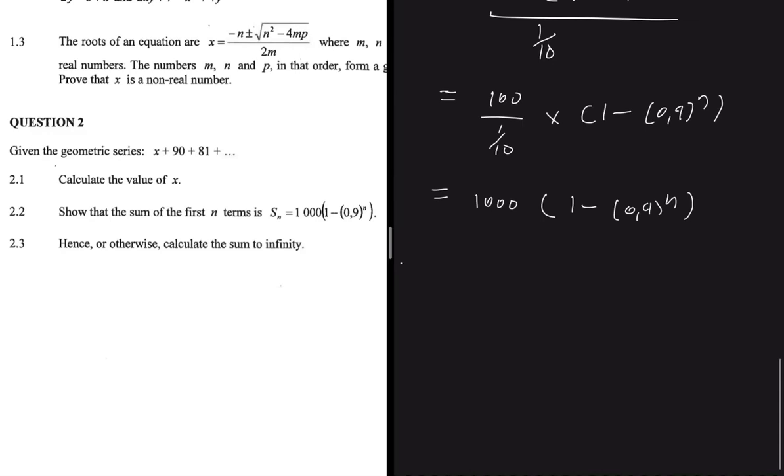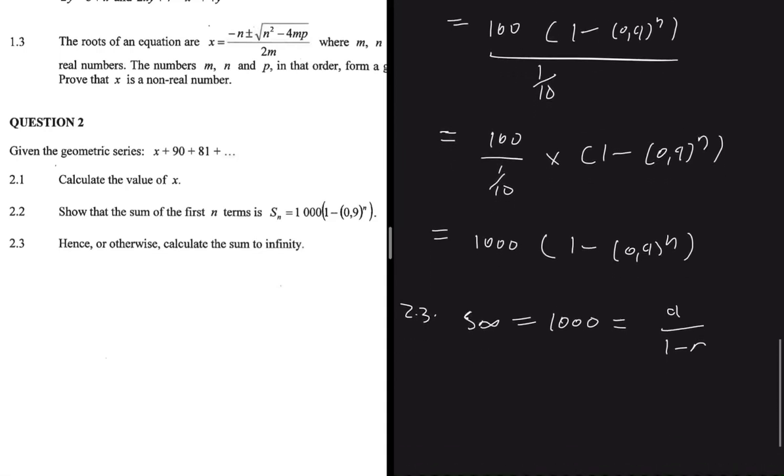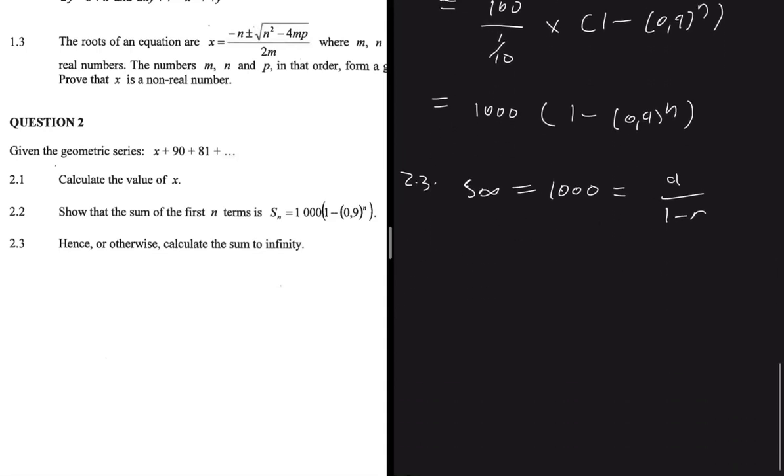And then 2.3 goes on to say, calculate the sum to infinity. After I calculated S_n, I know that the sum to infinity is going to be 1000. Why am I saying that? Because I know that the sum to infinity is just A divided by 1 minus R. And that's how we got 1000. We got it from A divided by 1 minus R.